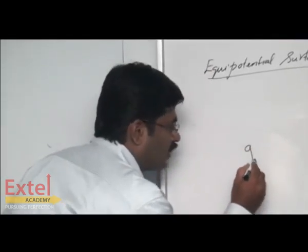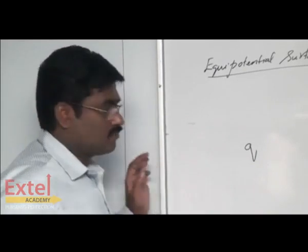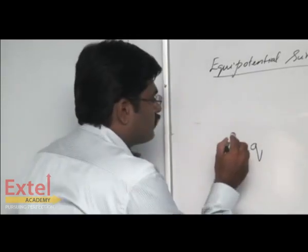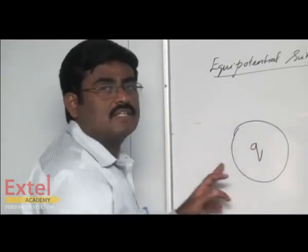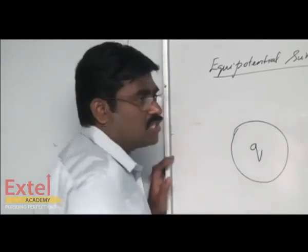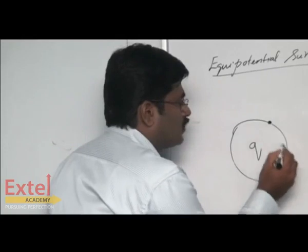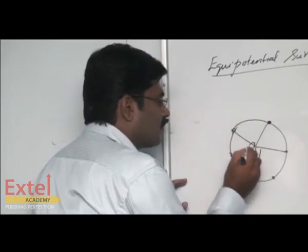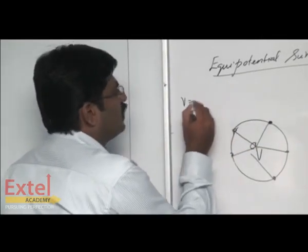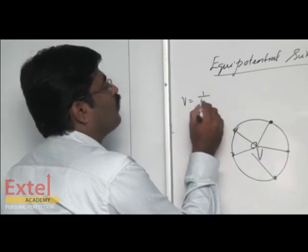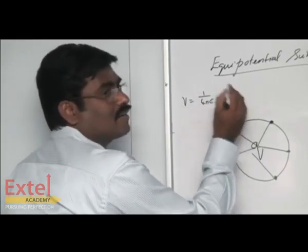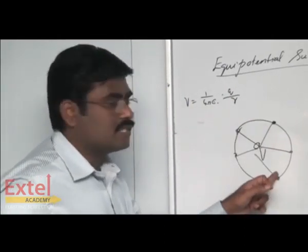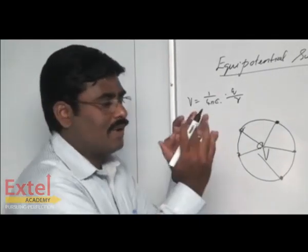In the case of an isolated charge, we can imagine a sphere like this which encloses a charge. Don't assume this is a circle — this is a sphere. If I look at any point on it, all the points will be at the same distance. The expression for V is: V = (1/4πε₀) × Q/R. This R is the same for all points located on the surface of the imaginary sphere.